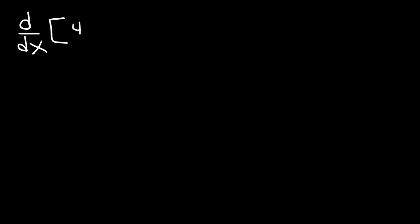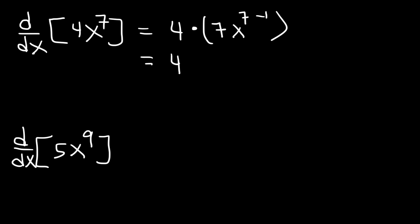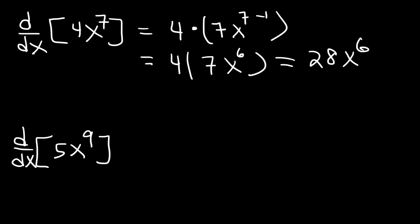Go ahead and try these examples: find the derivative of 4x to the seventh power, and also differentiate 5x to the ninth power, using the constant multiple rule. For 4x⁷, the constant is 4, and we need to differentiate x to the seventh power. Using the power rule, it's going to be 7x raised to the 7 minus 1. 7 minus 1 is 6, and 4 times 7 is 28. So it's going to be 28x to the sixth power.